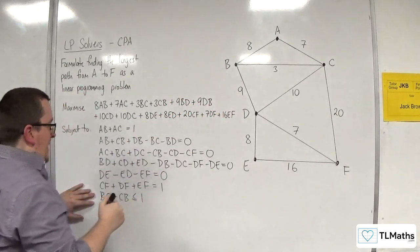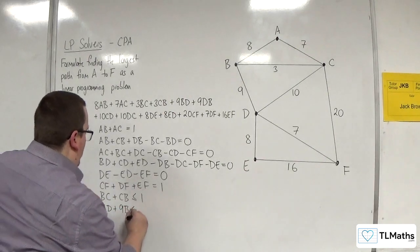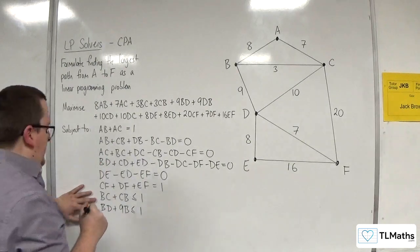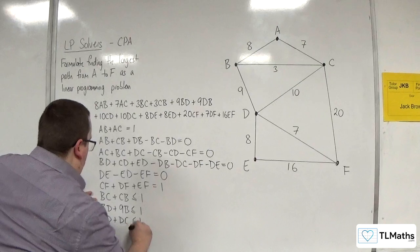We could repeat BD, so BD plus DB has got to be less than or equal to 1. We could repeat CD, so CD plus DC is less than or equal to 1.